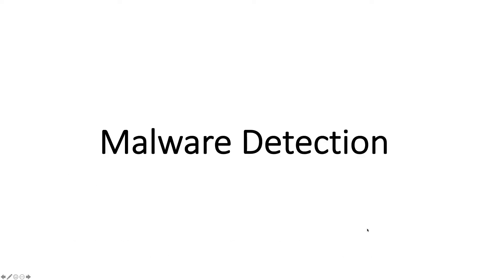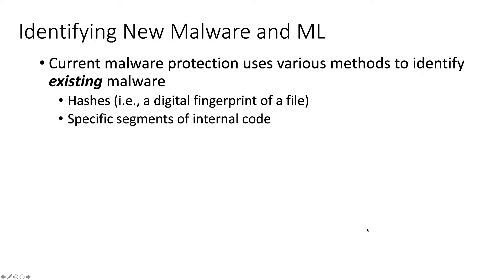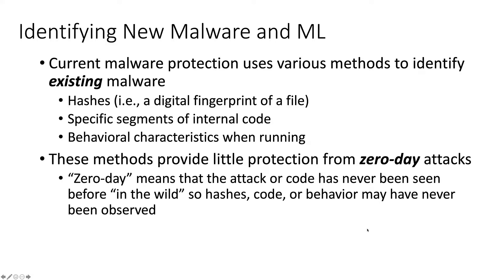Now let's look at an example of how machine learning can be used in malware detection. Currently, malware protection uses various methods to identify existing malware — for example, hashes, which are a digital fingerprint of a file based on its contents, specific segments of internal code, and behavioral characteristics when running. All of these methods can identify whether a file is malware or not. However, these methods provide little protection from zero-day attacks. A zero-day attack means the attack or code has never been seen before in the wild. So the hash, internal code, or behavior may never have been observed previously, meaning existing malware protection is less likely to identify those files as malware.